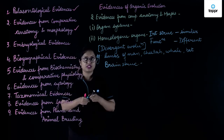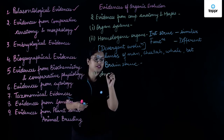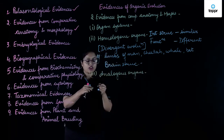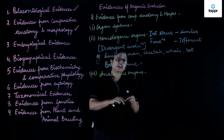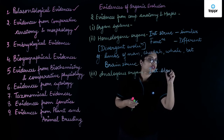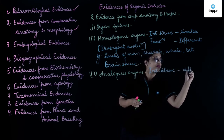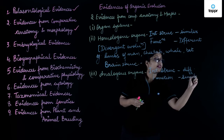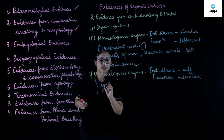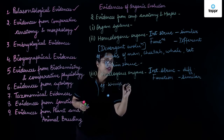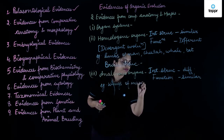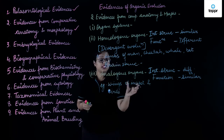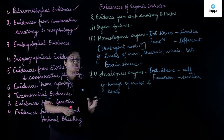Next comes analogous organs. Analogous organs are the organs with different internal structure but their functions are similar — that is, they perform similar functions. For example, wings of insects and birds. Both insects and birds use their wings for flying but the internal structure of them are different.